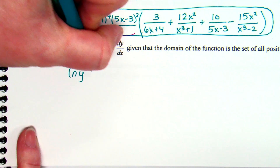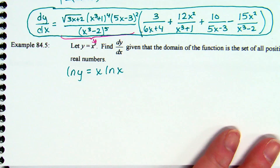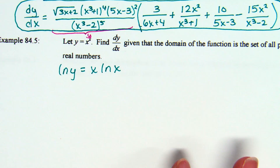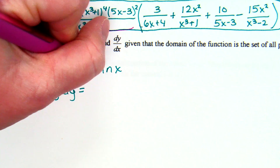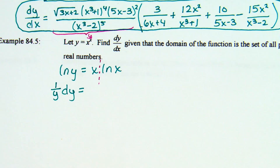Natural log of y equals — you pull that x out in front as the power — x times natural log of x. Now take the derivative. It's not x/x · dx; we need the product rule, because x and ln(x) are their own functions. We have to employ the product rule.